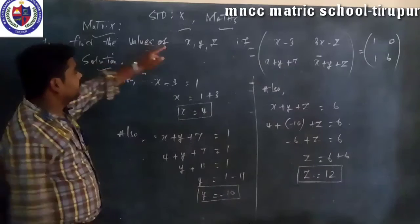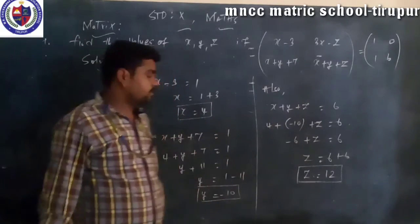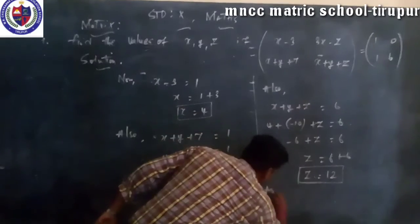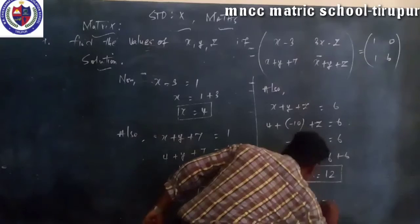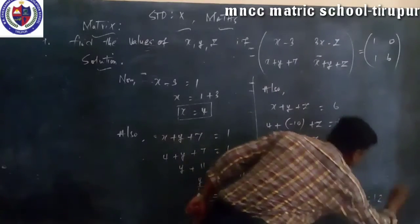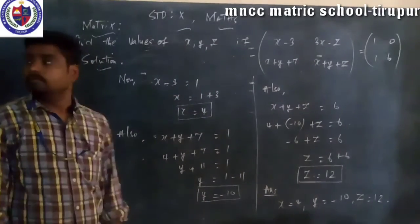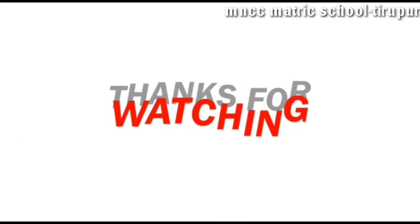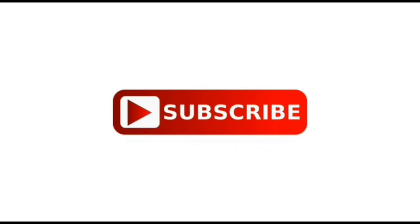So find the value of x, y, z. First x is the value of 4, y is equal to minus 10, z is equal to 12. So that's it. Thank you.